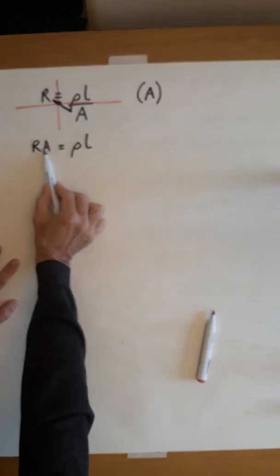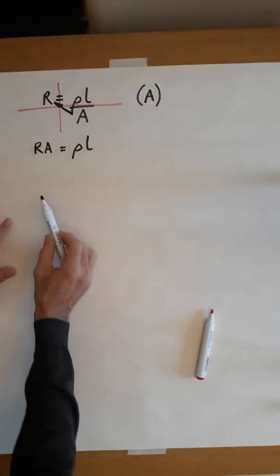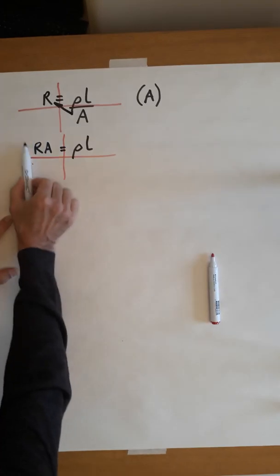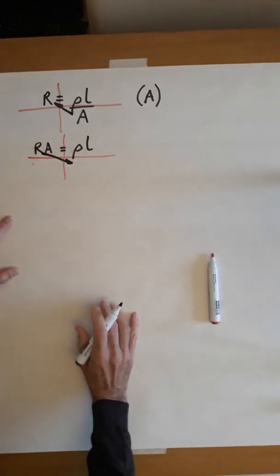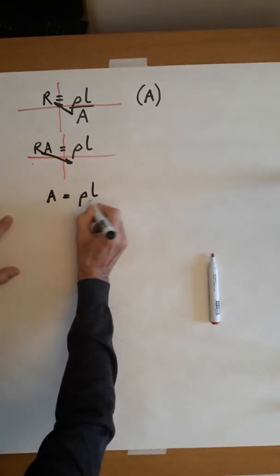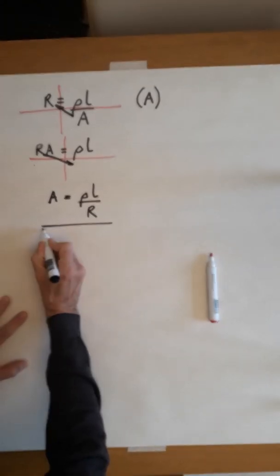So the next step, we want A on its own. We need to move the R. And if we underline again, underline and put the cross in, the R is going to go from the top left to the bottom right. That R is going to move down there. So let's write that. A equals ρL over R. And that's the answer that we're aiming for.